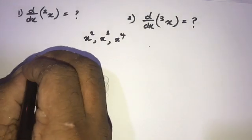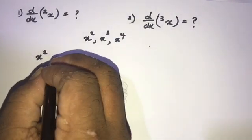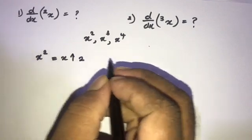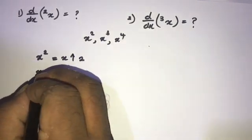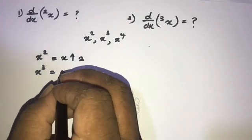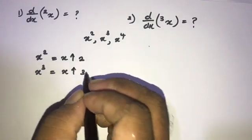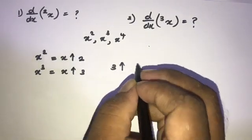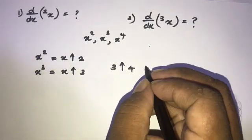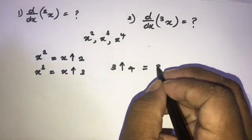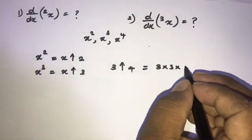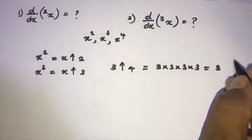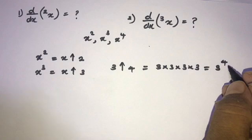According to notation, x squared is equal to x arrow 2, and likewise x cubed is equal to x arrow 3. For example, if we get 3 arrow 4, we can write this as 3 times 3 times 3 times 3, which is equal to 3 to the fourth power.